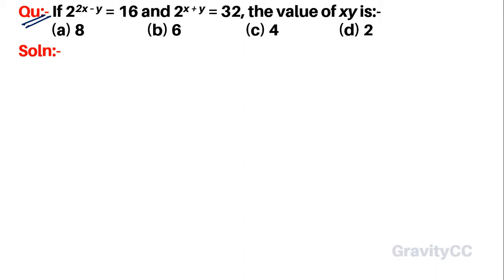Question: If 2^(2x-y) = 16 and 2^(x+y) = 32, the value of xy is? So we are given 2^(2x-y) = 16 and 2^(x+y) = 32.